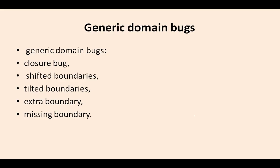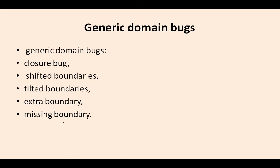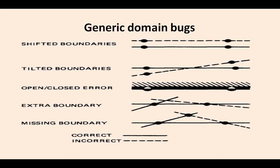Now we will see the generic domain bugs. The generic domain bugs in general domain testing are: closure bug, shifted boundaries, tilted boundaries, extra boundary, and missed boundary. Shifted boundaries are boundaries parallel to another boundary but with holes in between. Tilted boundaries are boundaries crossing each other but with holes at the intersection. Open and closed errors occur when a point is half on the boundary, half outside — lying partly inside, partly outside the boundary.